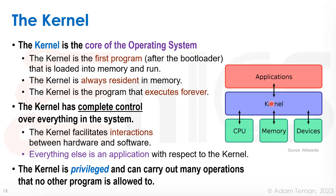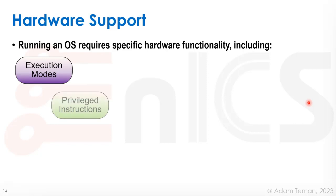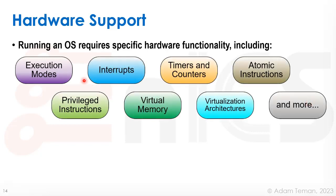The kernel is privileged, which means that it can carry out many operations that no other program is allowed to do. Let's discuss this privilege in a much deeper way, but first let's cover what hardware support we need for running an operating system. We need different functionality built into the hardware, including execution modes, privileged instructions, interrupts, virtual memory, timers, counters, virtualization architectures, atomic instructions, and many more.